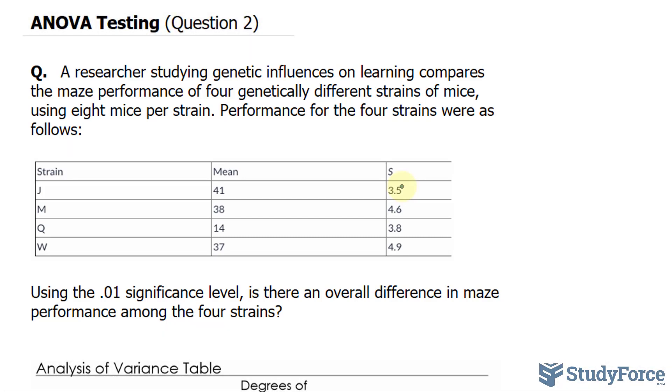As you can tell, the difference between this question and question number one was that in question one, we were given the data for each group. In this case, we're not given that data, but instead, we're given the mean and standard deviation.